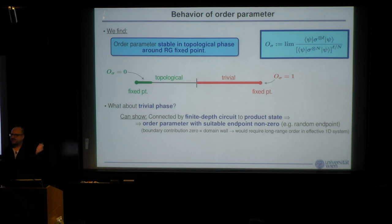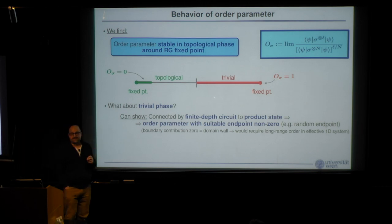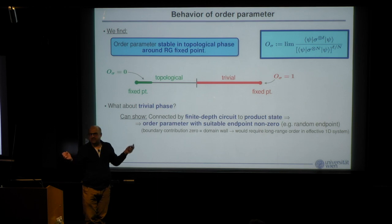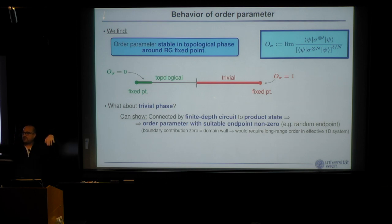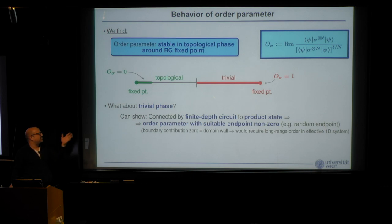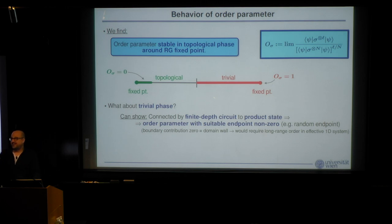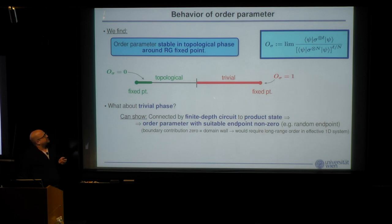For the trivial phase, one can show something similar: applying a finite-depth circuit to a product state — the RG fixed point of the trivial phase — the string order parameters will always be non-zero for a suitable endpoint. The intuition is: if a string order parameter is zero not from a poor endpoint choice but from a topological obstruction, it creates a domain wall, implying long-range order. But a product state plus finite-depth circuit has no long-range order, so the parameter must be non-zero.